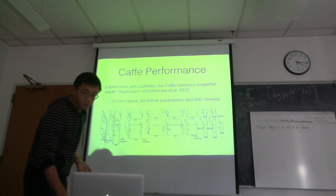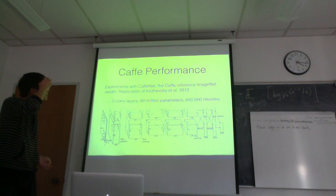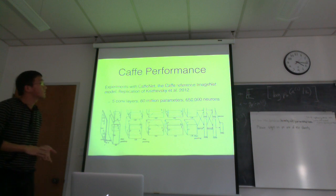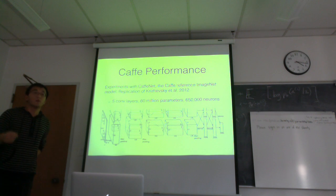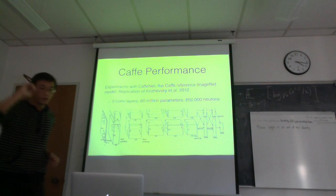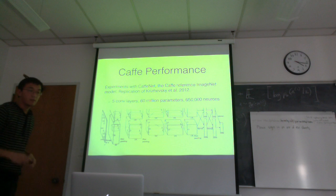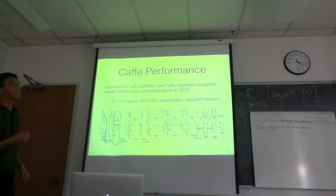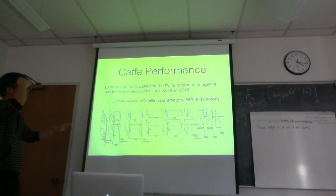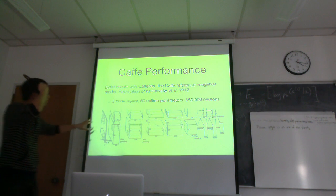I want to show the Caffe performance when using GPU compared to CPU. These experiments are done with the CaffeNet reference image classification model that works well in the ImageNet challenge. This neural network takes an image as input and the last layer outputs 1,000 labels because it does classification among 1,000 classes. It has about 60 million parameters.